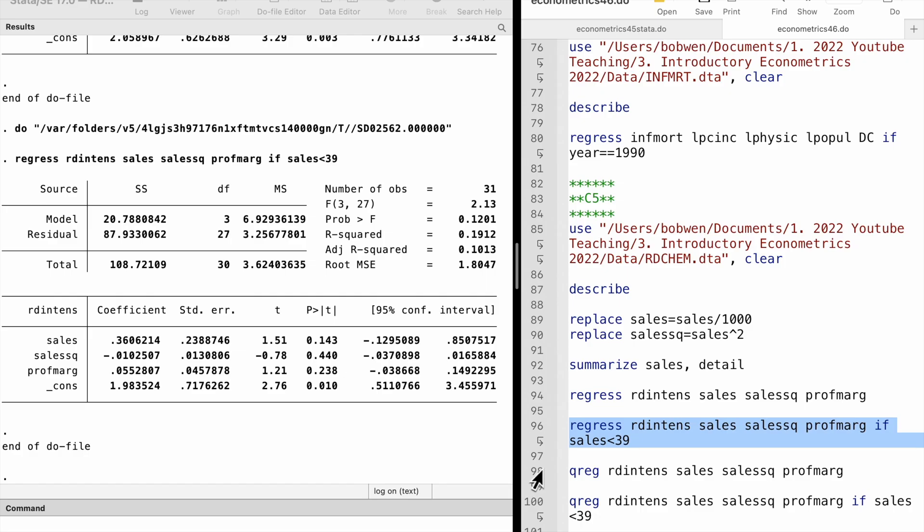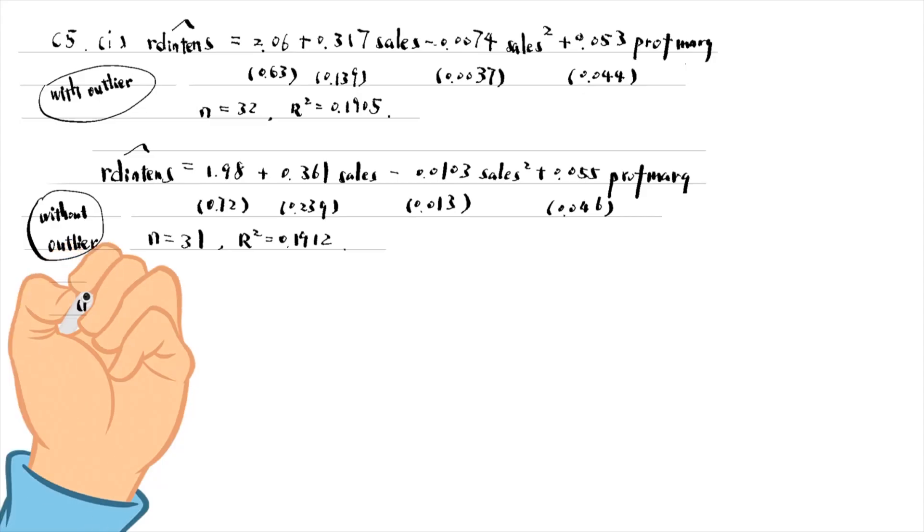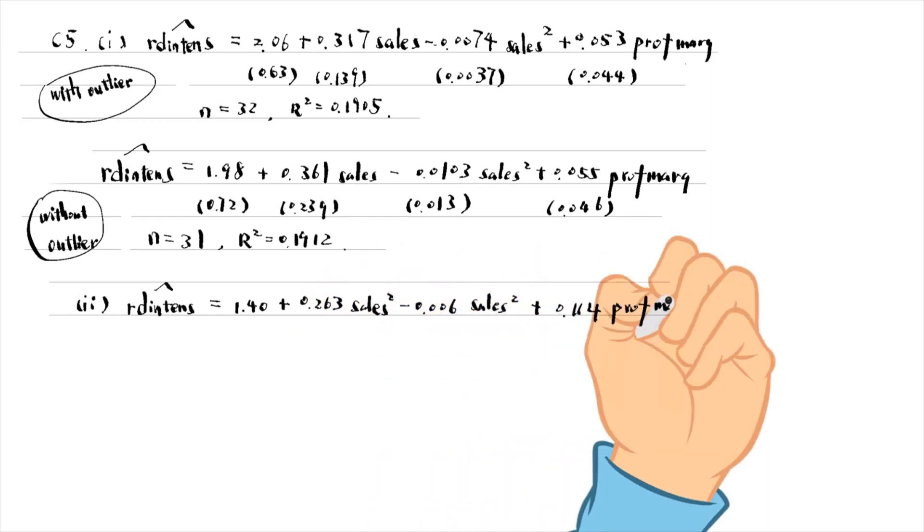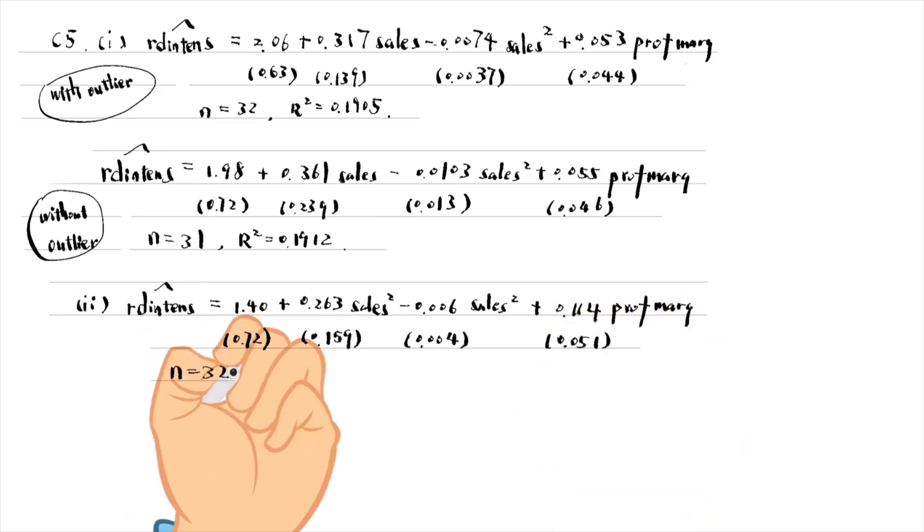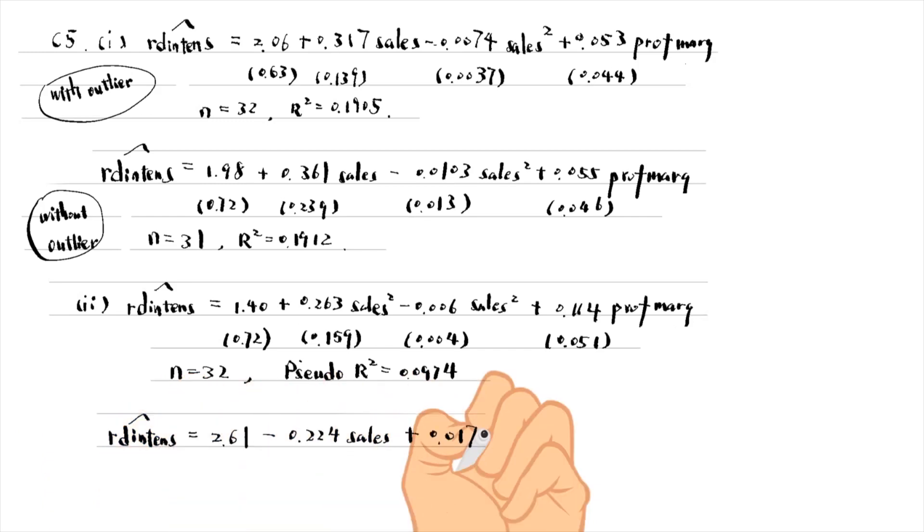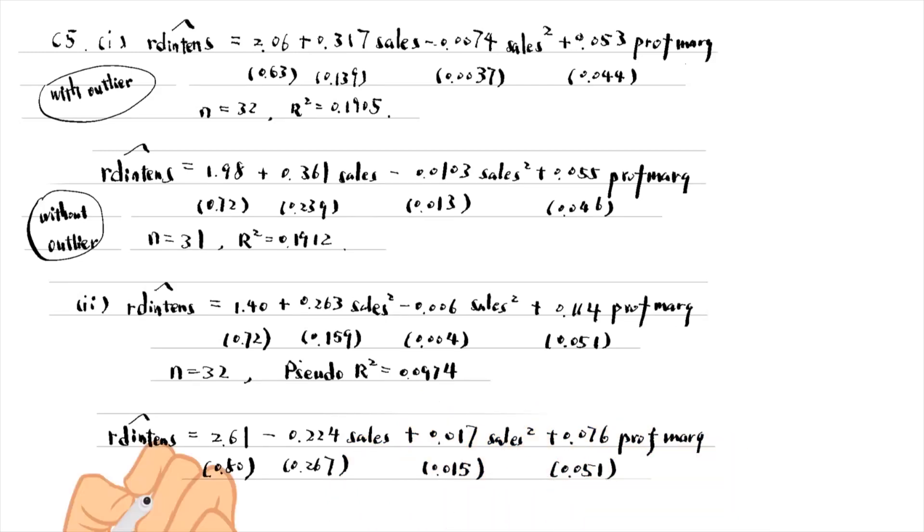For part 2, we perform the least absolute deviations regression. In Stata, we use the quantile regression command qreg to do that. It minimizes the sum of the absolute values of the residuals. The estimated equations by least absolute deviations are as follows.